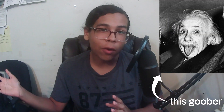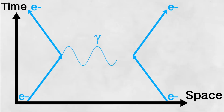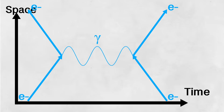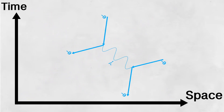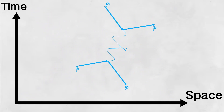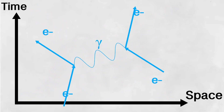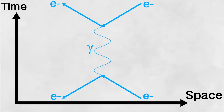According to Einstein, space and time are interchangeable at near light speeds — hence spacetime. So really, we can not only swap these axes, but we can also rotate the diagram as much as we want. If we rotate it 90 degrees, we're left with this, where these electrons are now moving backwards through time.